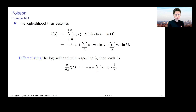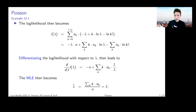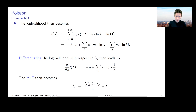Taking the derivative with respect to lambda, we get a straightforward expression: the derivative of minus lambda times n gives minus n, and differentiating the logarithm of lambda gives one over lambda. Setting this equal to zero and solving for lambda, we find that the maximum likelihood estimate of lambda reduces to the sample mean — that is, the average number of claims reported per year on this policy.